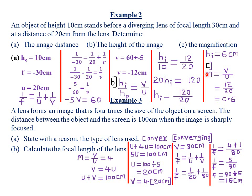For part c, the magnification is v/u = 12/20 = 0.6. Alternatively, magnification = hi/ho = 6/10 = 0.6 as well. Since the magnification value is below 1, it shows that the image formed is actually diminished. If the value were above 1, the image would be magnified. If magnification equals exactly 1, it means the image has the same dimensions as the object, and magnification has not taken place.